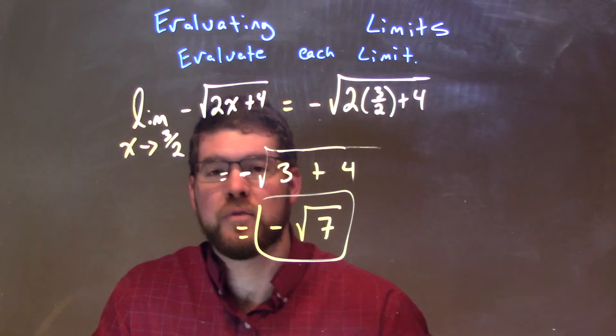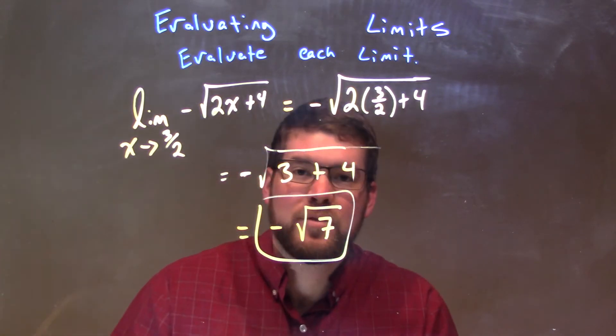So, we have this negative square root of 7. Now, remember, negative is on the outside, so it's really fine for a square root, and that is our final answer.